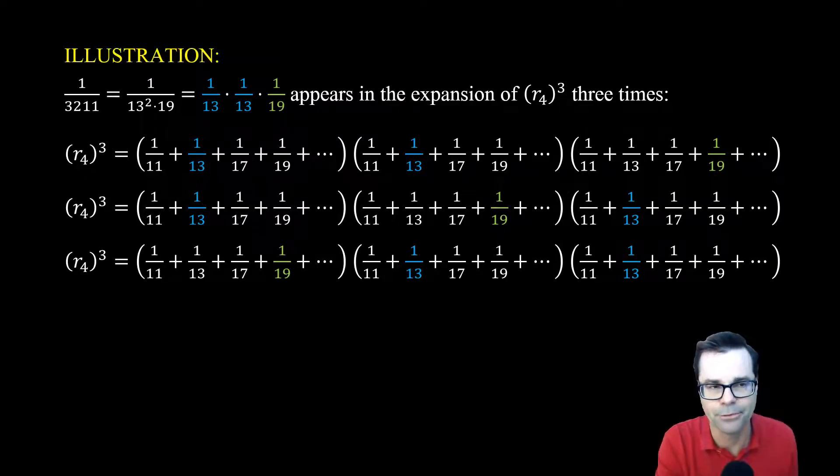is that every reciprocal of a number that has exactly three prime factors, not necessarily distinct, so counting multiplicities, is going to show up at least once when we raise this infinite series to the third power.